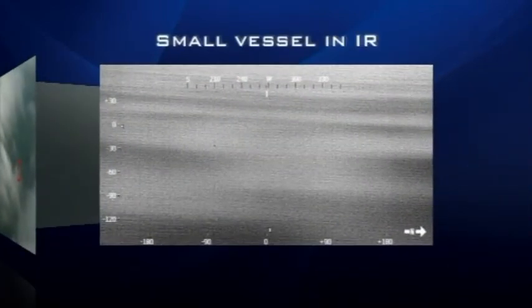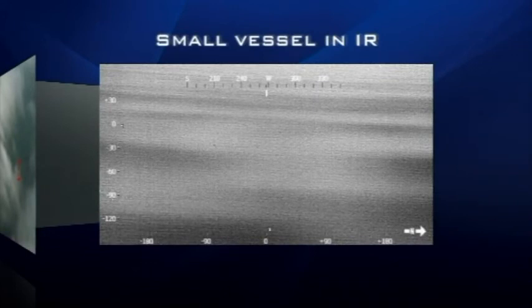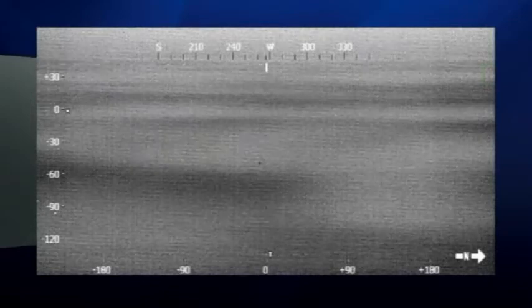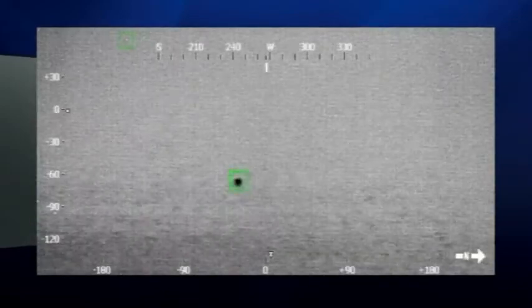Kestrel operates equally well detecting objects using infrared sensors. In this piece of imagery, Kestrel has detected a small object in IR. Once more, as the operator begins to zoom in and switches to the EO camera, you can see that Kestrel has detected a small, stationary, wooden vessel.